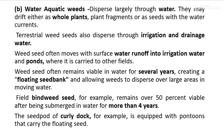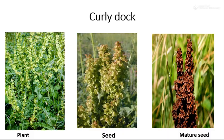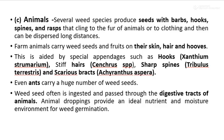For example, the seed pod of curly dock is equipped with pontoons that carry the floating seeds. The picture shows the curly dock plant, its seed, and mature seeds. This weed seed is very light in weight and is mostly transmitted from one place to another through water.